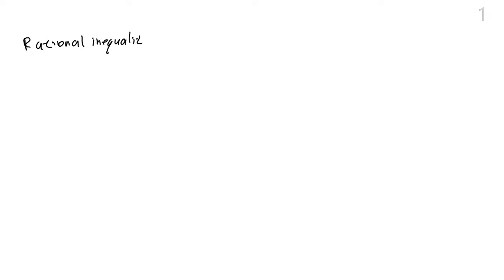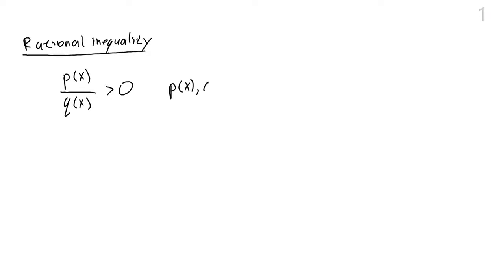A rational inequality is when you have an inequality involving a rational expression. For example, we have a rational expression like p over q and we ask when is this rational expression greater than zero. This is a rational inequality, where p and q are polynomials, and like always we exclude all solutions such that the denominator is zero.